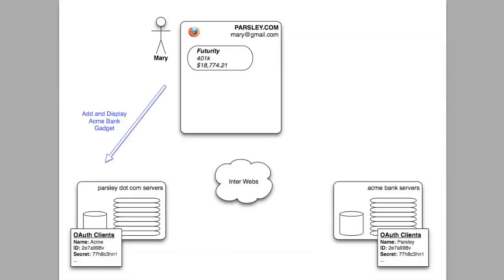Welcome to part four of our series of screencasts explaining the OAuth 2 protocol. You've just seen a demo of a user granting an access token allowing Parsley.com to access their bank balances at Acme Bank. Now we'll walk through this process step by step. We're simply going to show you the how of this process — this is a walkthrough of how the mechanics of token granting might be implemented as defined in the web server flow from the OAuth 2 draft. There are other token granting flows; this is the web server flow.